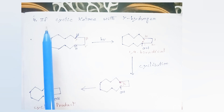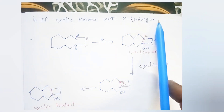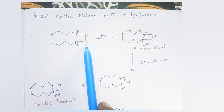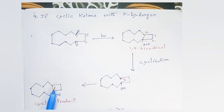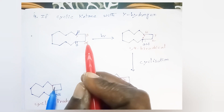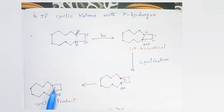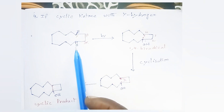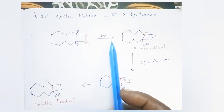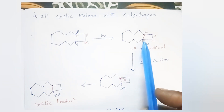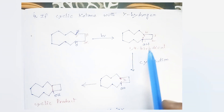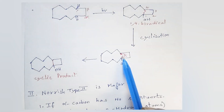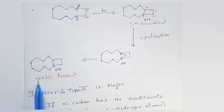If a cyclic ketone with a gamma hydrogen is irradiated by UV light — this is a cyclic ketone, this is the alpha carbon, this is the beta carbon, and this is the gamma carbon. The gamma carbon has a hydrogen atom which is abstracted by the oxygen of the carbonyl compound upon UV irradiation, giving us a 1,4-biradical. This 1,4-biradical will undergo cyclization — this radical and this radical will combine together to form a cyclic product. This is the major product.